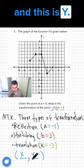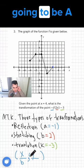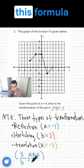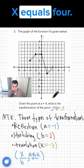This is x, and this is y. Now it's going to be x over b, and it's going to be a times y plus k. We can use this formula to determine the transformation of the point at x equals 4.